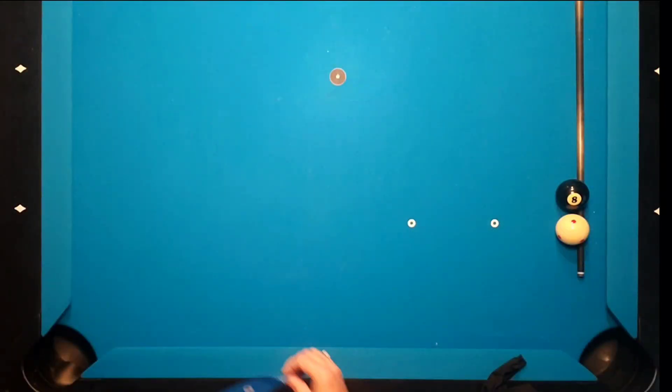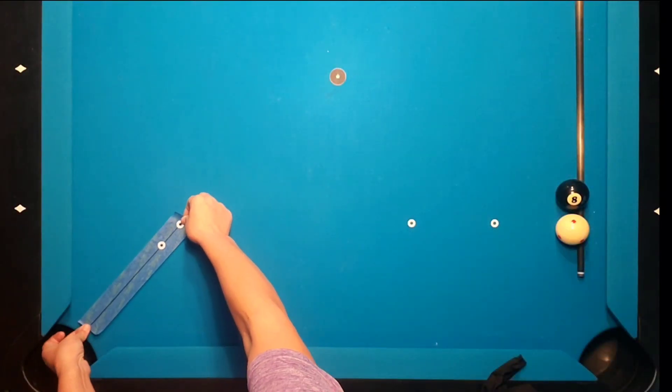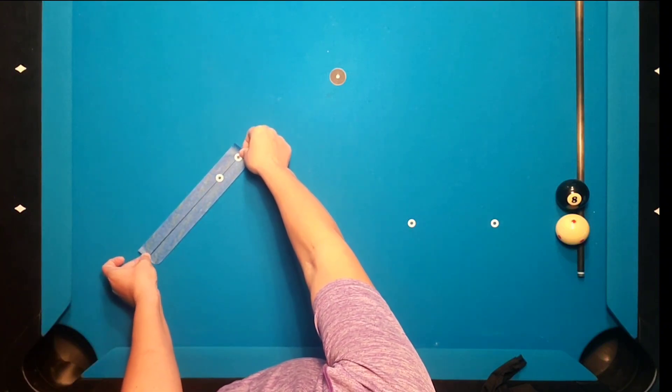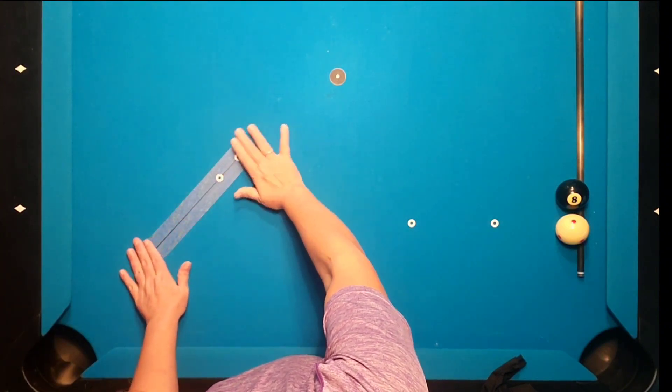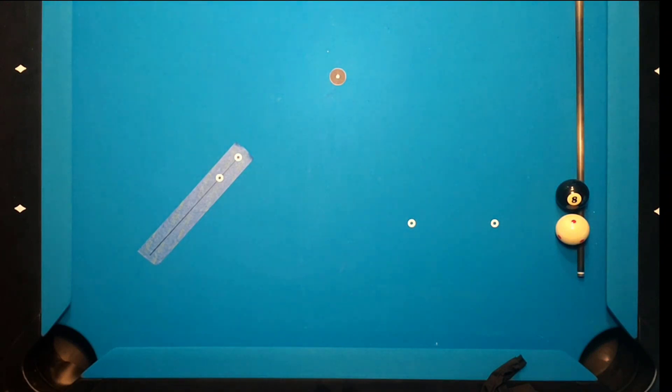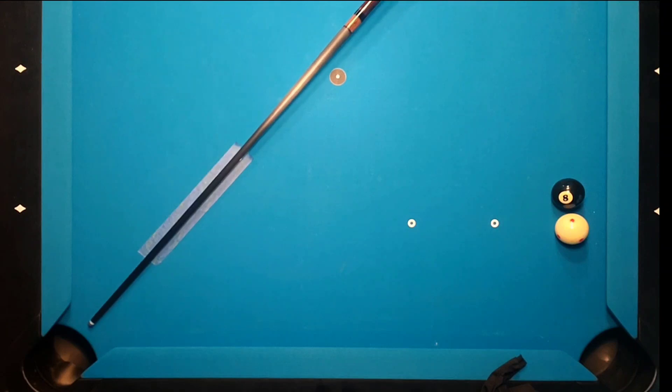Now it is time to test our aiming aid. Place the aiming aid so that the object ball will be 12 to 18 inches from the pocket. Place it similarly to how I have it shown on the video. To ensure that it is correctly placed, use your pool cue and make sure the line on the aiming aid is lined up with the center of the pocket.